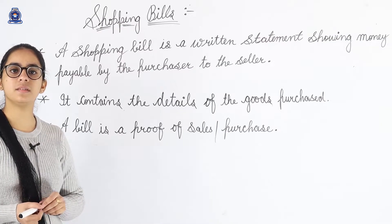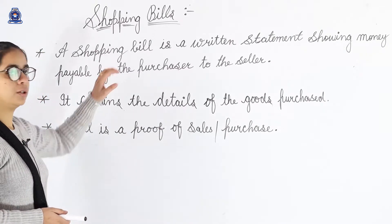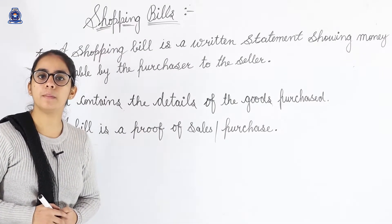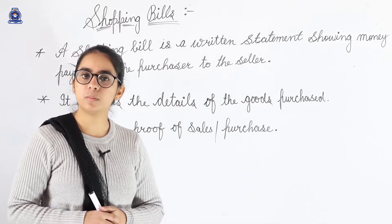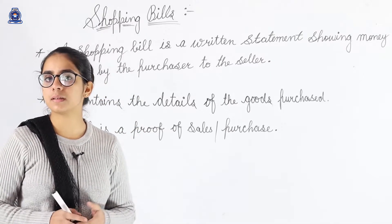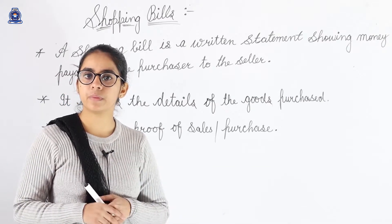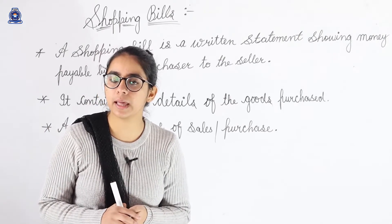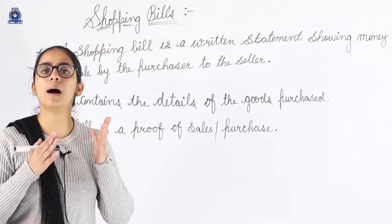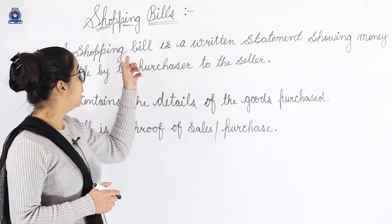So our next important term in our chapter on money is shopping bills. Shopping bills kya hai? Jab aap kisi bhi shop se kuch purchase karte hai, toh aap usse bolte hai — give me a bill. Jis tarah se aap mall se shopping kar rahe hai, toh mall se aapko zarur hi bill milega. In a normal market also, it is compulsory — aap boliye unhe ki bill de dijiye.